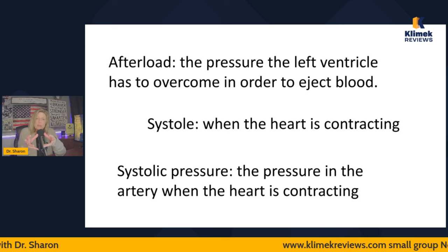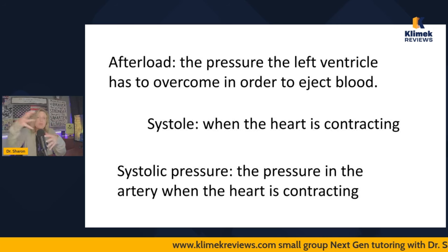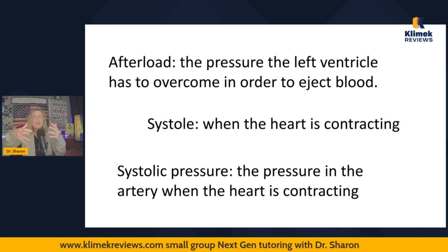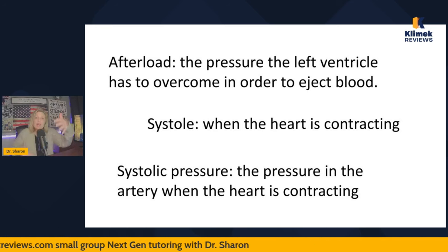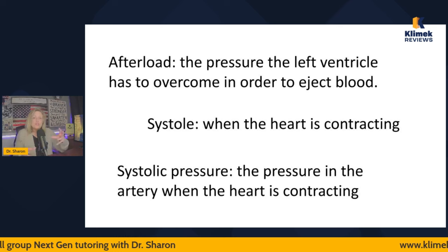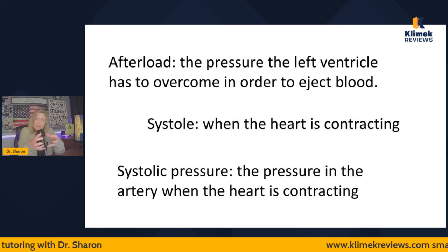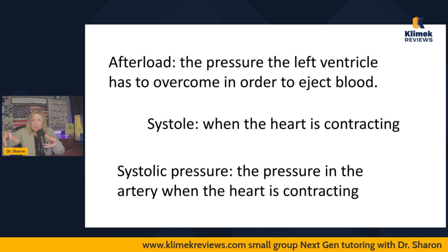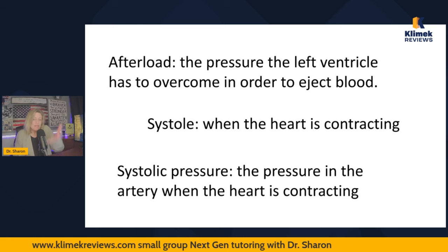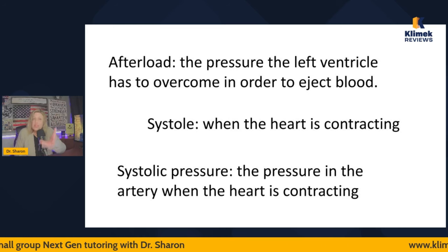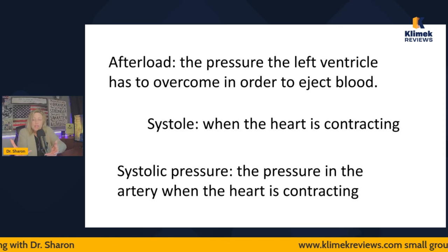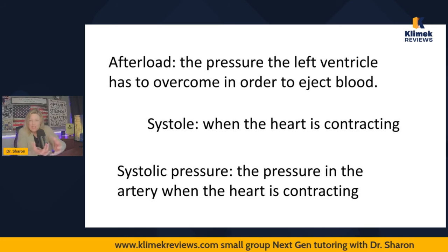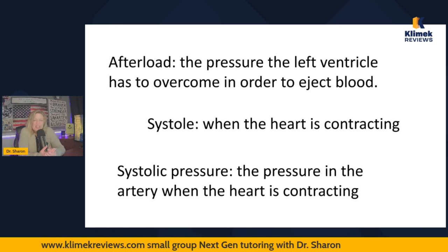Afterload is the amount of pressure the heart has to overcome to get that blood out. Blood flows from areas of high pressure to low pressure, so the heart has to generate a high enough pressure to overcome that peripheral pressure to actually eject the blood. Preload is the volume of blood — the available blood to be ejected. Afterload is the amount of pressure the heart has to overcome to eject the blood that's available in the heart.